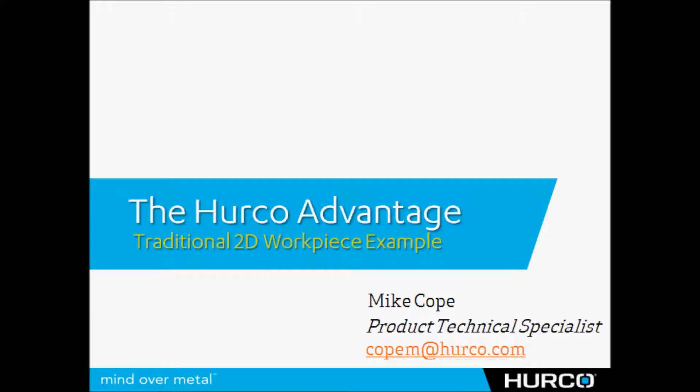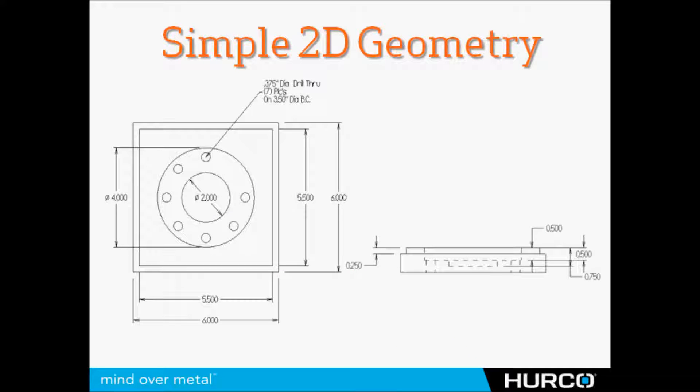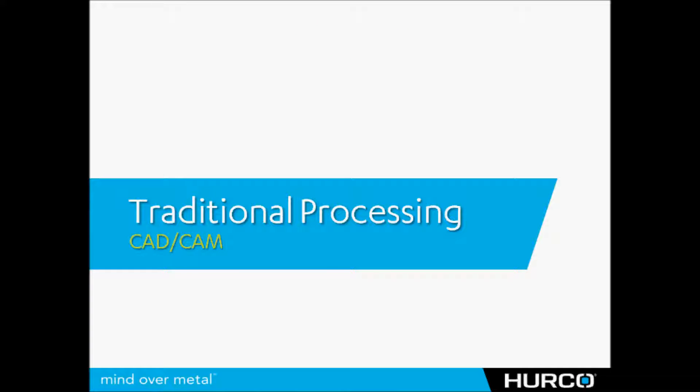In this video, I'm going to walk through a very simple program of a two-dimensional part. It's got a couple of circular pockets, a bolt circle, a drilled bolt circle, and a frame around the outside of the part. Simple geometry, but very typical of what you might see on many parts in the job shop arena.